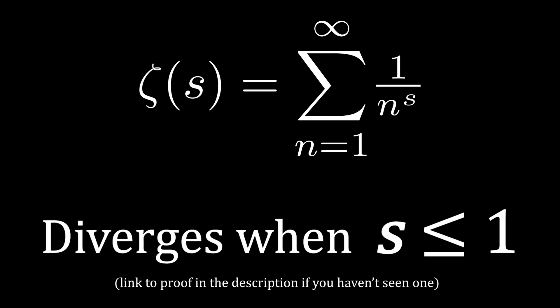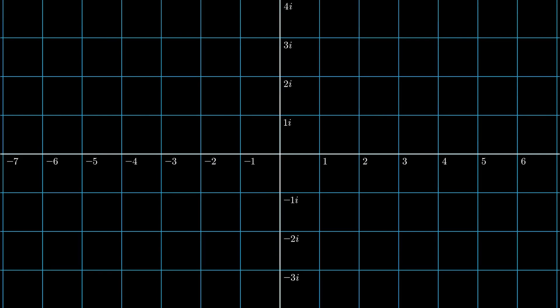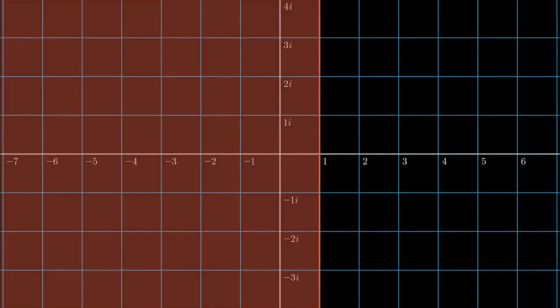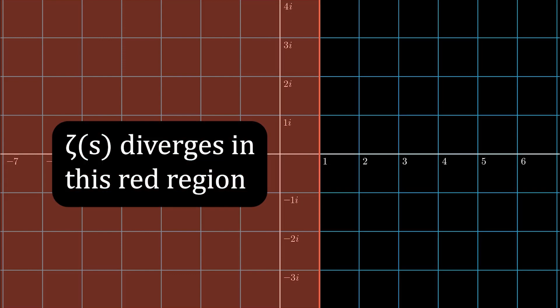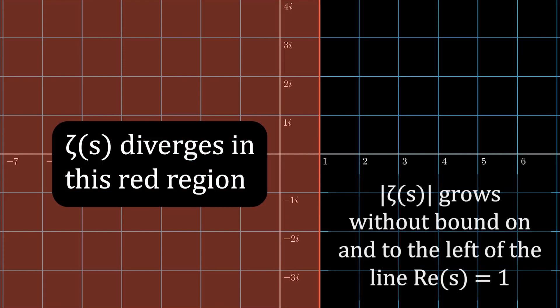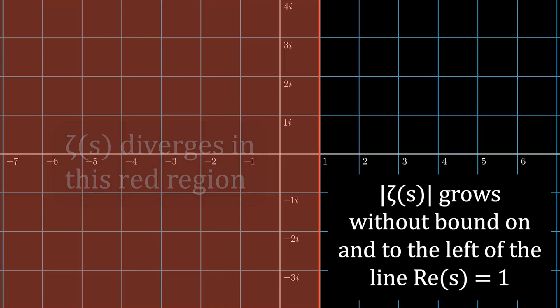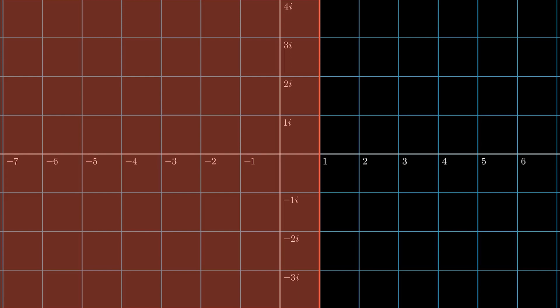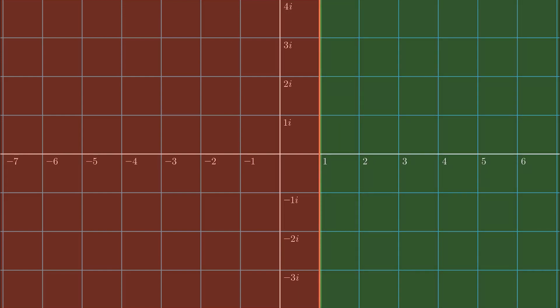In fact, if we consider s to be a complex number and look at the entire complex plane, we can see that zeta diverges if s has real part less than or equal to 1. So using this definition of the Riemann zeta function, we can only plug in values of s from this region of the complex plane.